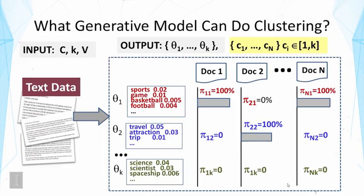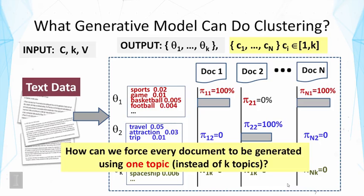Because of these connections, we can naturally think about how to use a probabilistic generative model to solve text clustering. The question is: what generative model can be used? As in all cases of designing a generative model, we want the model to adopt the structure we hope to model — in this case, the clustering structure where each document covers one topic. A main requirement is how to force every document to be generated from precisely one topic instead of K topics as in the topic model.